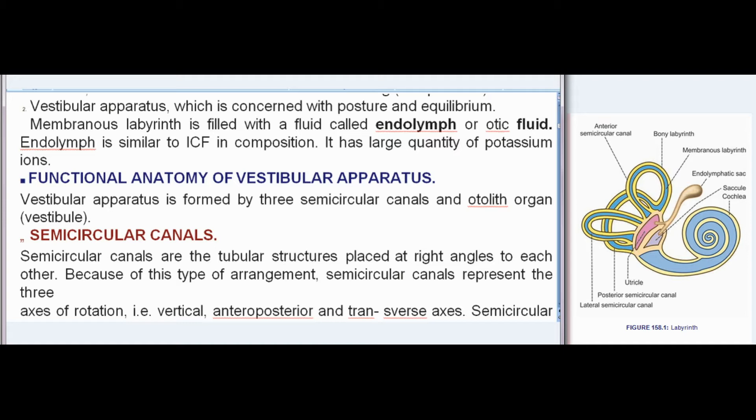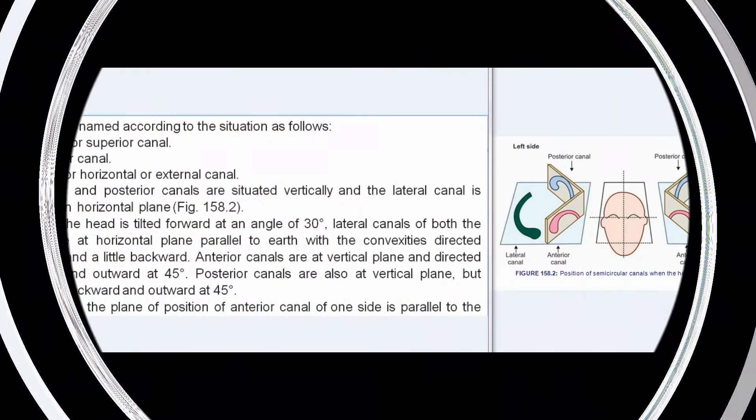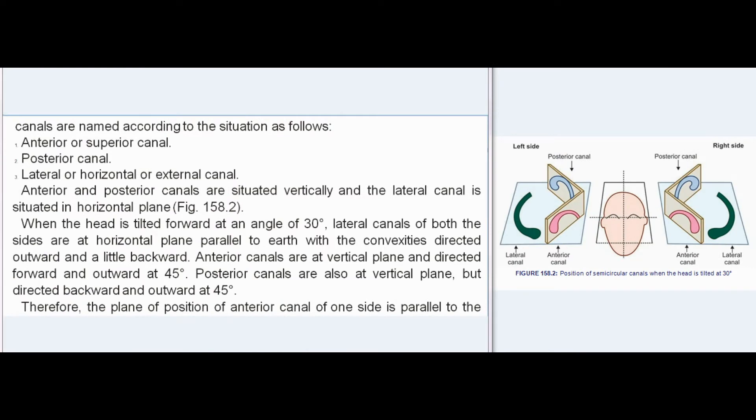Semicircular canals are tubular structures placed at right angles to each other. Because of this arrangement, the semicircular canals represent the three axes of rotation: vertical, anteroposterior, and transverse axes. They are named according to their situation as: anterior (superior) canal, posterior canal, and lateral (horizontal or external) canal.